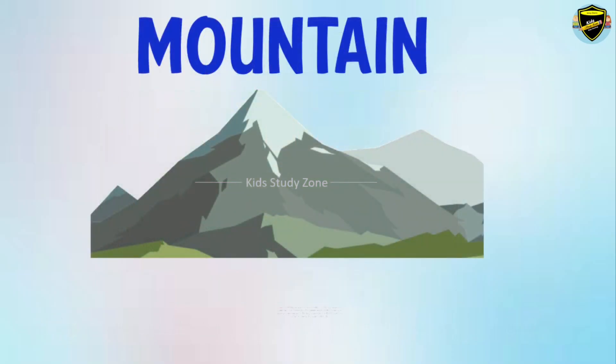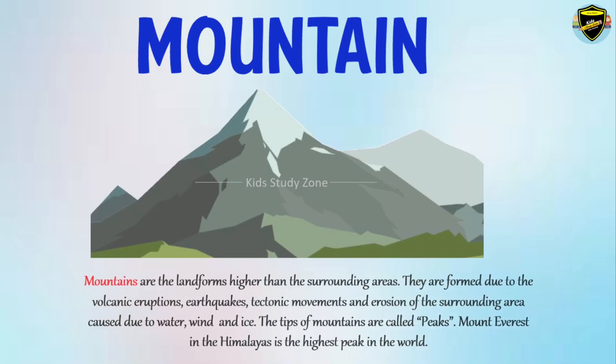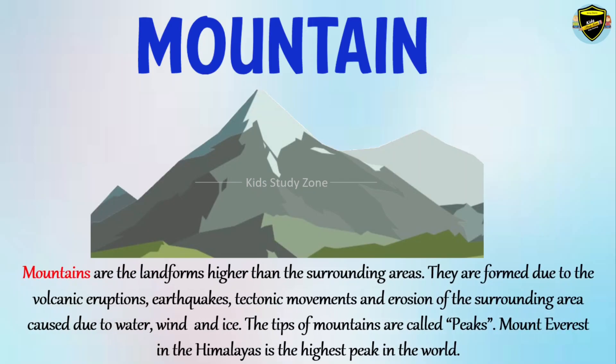Mountain. Mountains are the landforms higher than the surrounding areas. They are formed due to volcanic eruptions, earthquakes, tectonic movements, and erosion of the surrounding area caused by water, wind and ice. The tips of mountains are called peaks. Mount Everest in the Himalayas is the highest peak in the world.